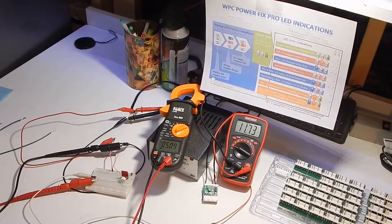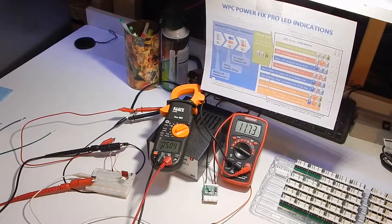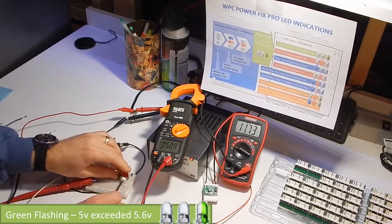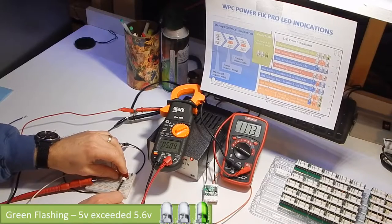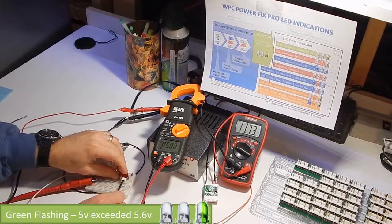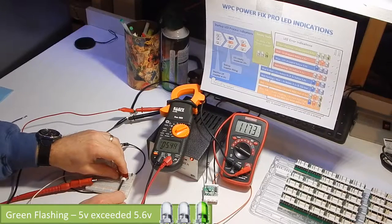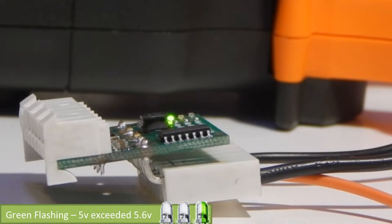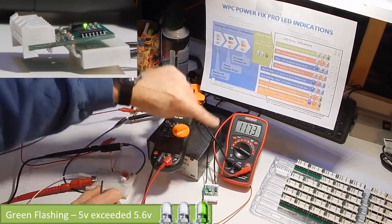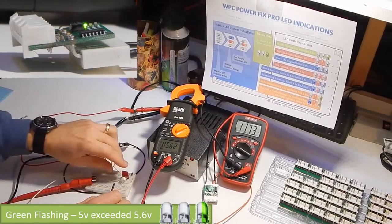Now onto the error state. Let's start by taking the 5-volt high, up to about 5.6 volts so that we can see the green flashing state, the first state shown on the graphic. Taking it up a little higher. There we go. You can see the 5 volts is up around 5.6, the flashing green, and we're in that state there.